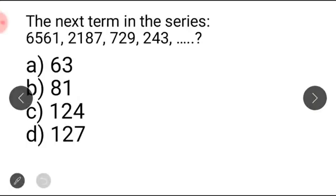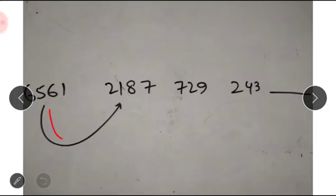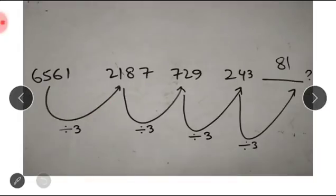The next term in the series: 656, 121, 87, 729, 243. This is a decreasing series with exponential difference, so it involves division. We divide the first term by the second term — the answer is 3. So we assume each term has been divided by 3.